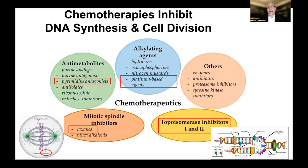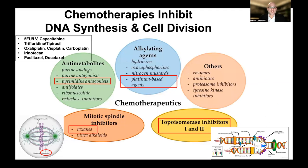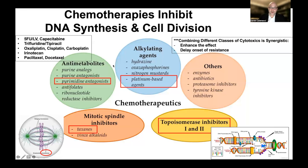We've looked at the four main classes of chemotherapy drugs: antimetabolites, alkylating agents, topoisomerase inhibitors, and mitotic spindle inhibitors, and the specific ones used in gastroesophageal cancer: 5-FU with leucovorin, capecitabine, trifluridine/tipiracil, oxaliplatin, irinotecan, and the taxanes. Combining these agents across different classes can enhance their effect synergistically in inhibiting DNA synthesis and cell division. Combinations also delay the onset of resistance because resistance mechanisms for each class are different, so a cell would take longer to become resistant to all components than to a single agent.